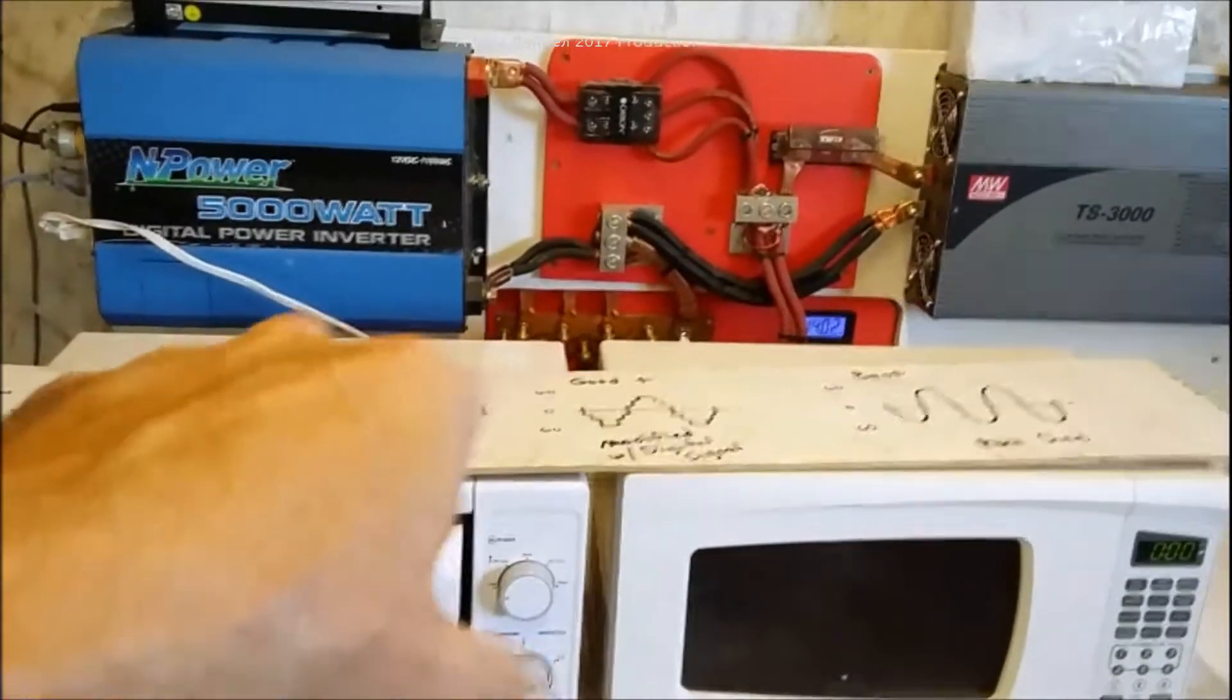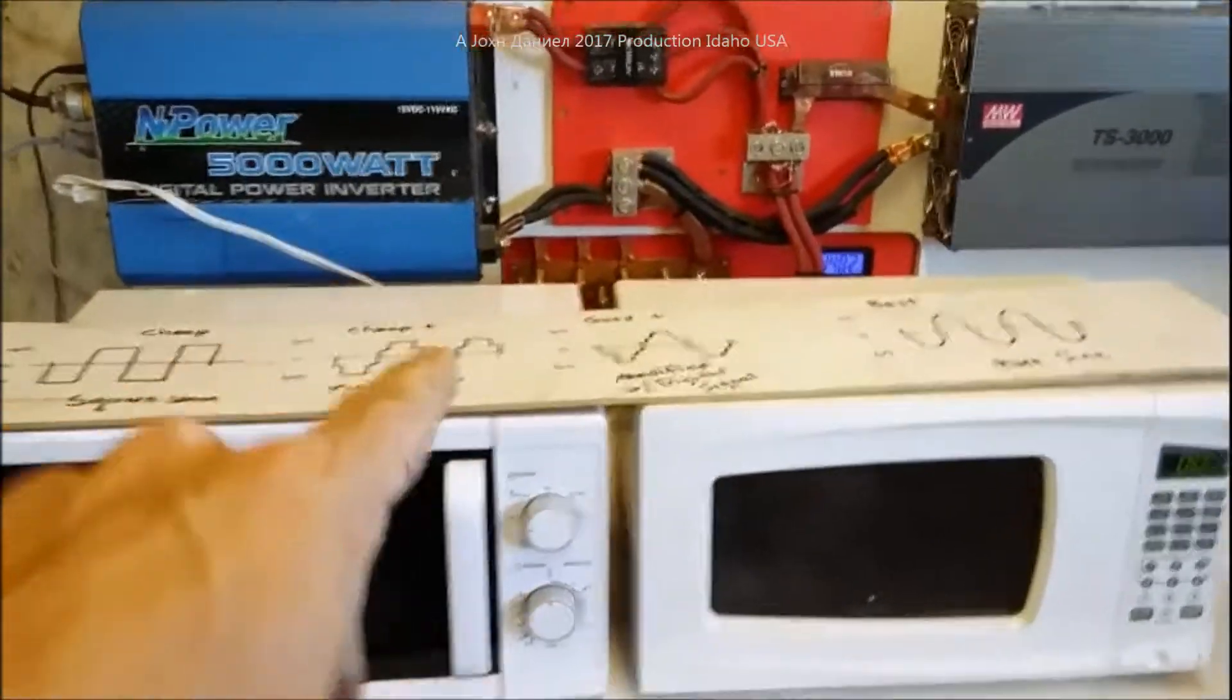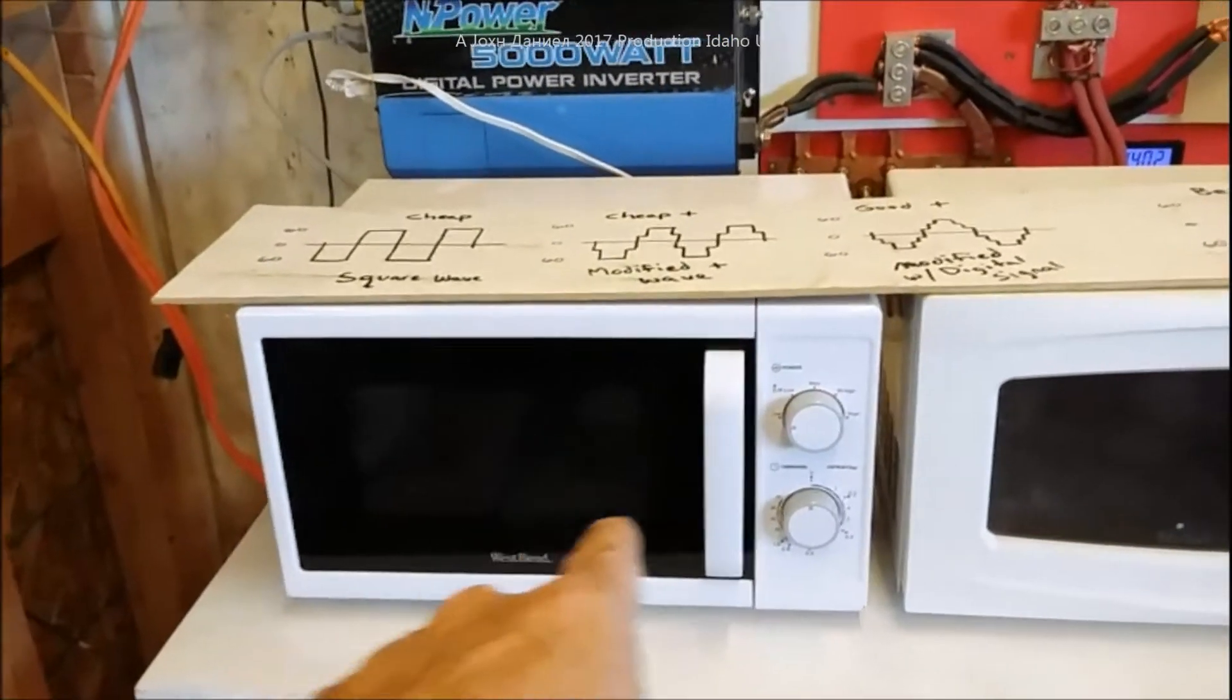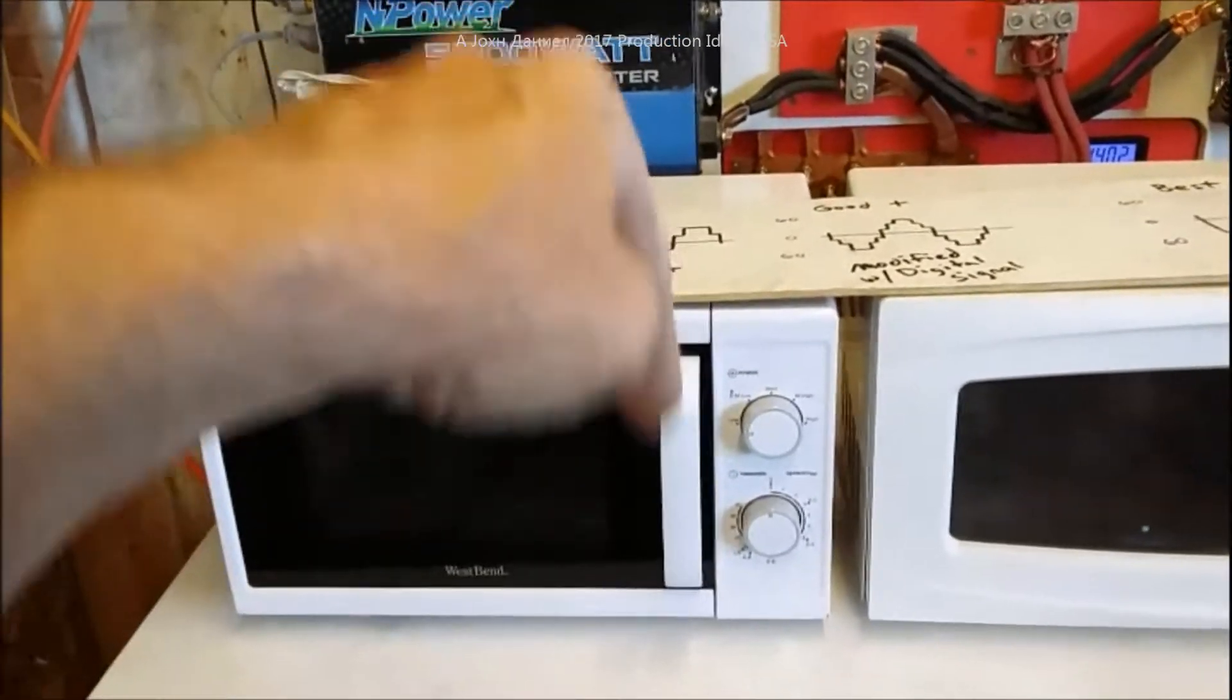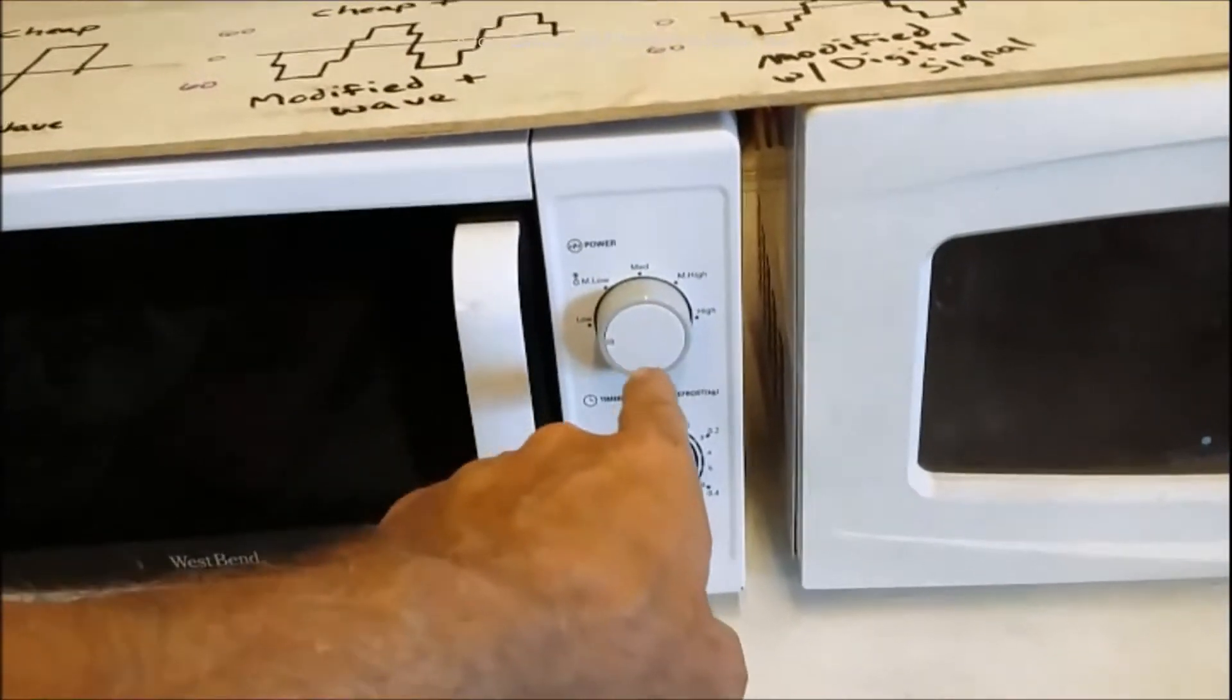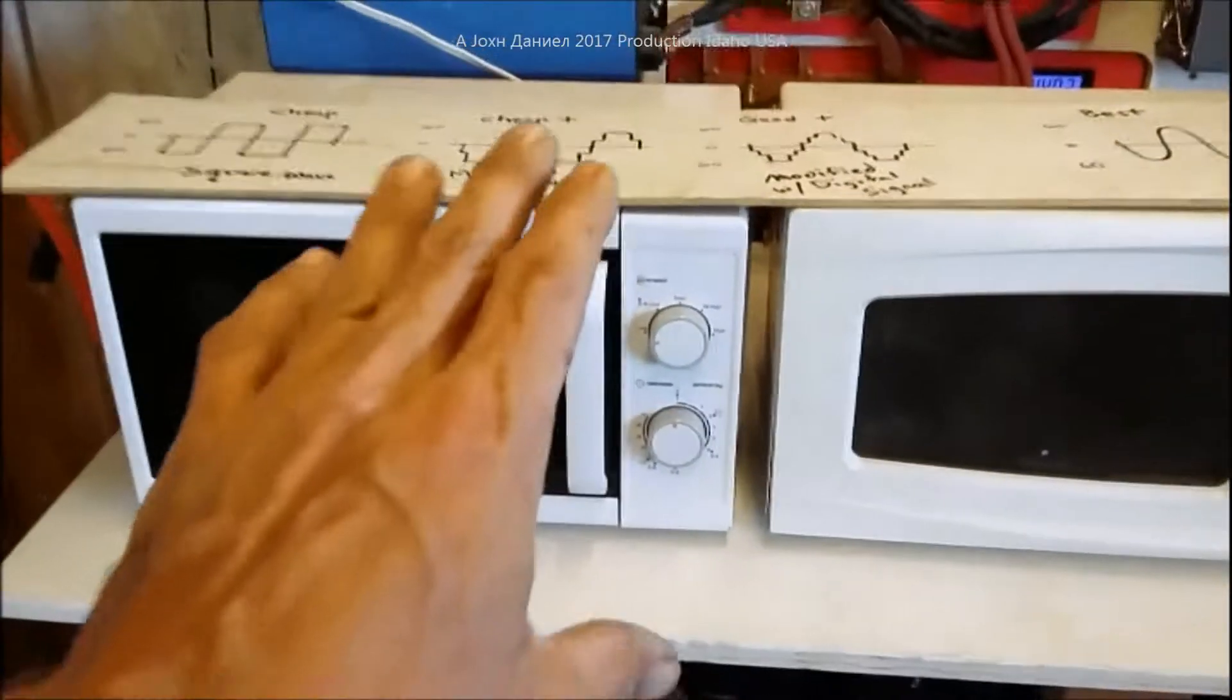Now this microwave is a West Bend, however the only one that replaces it now is a Westinghouse. You'll see a link down at the bottom. It is a manual microwave, it draws no power, zero while sitting. They make a six and nine cubic feet, 600 and 900 watt, extremely good microwaves. They have the Samsung magnetrons inside them.